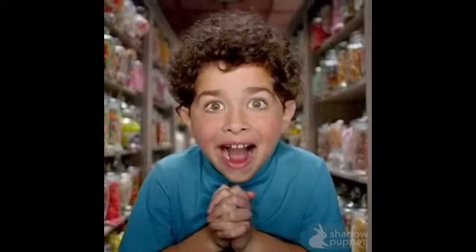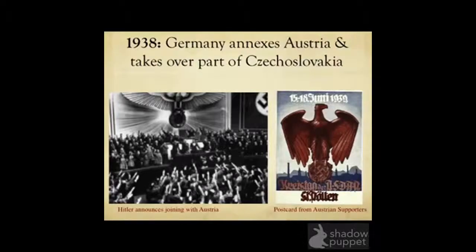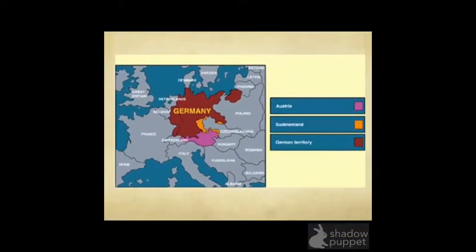In 1938, Germany annexed Austria and took over part of Czechoslovakia. These lands had been taken from Germany in the Treaty of Versailles at the end of World War I. Hitler claimed that Germans in Austria were being treated as second-class citizens, and argued they should be united with Germany in the Anschluss. German soldiers marched in, forced the Austrian leader to sign an agreement, and took Austria without a fight. Similarly, Hitler took the Sudetenland, located in Czechoslovakia — German land lost in the Treaty of Versailles, shown here in orange. Germany took over this area of Czechoslovakia as well.